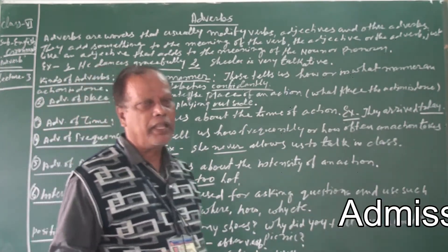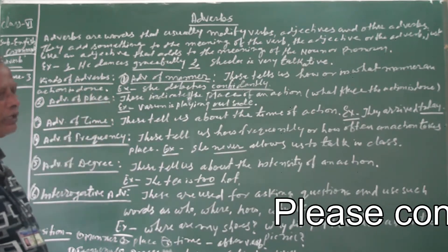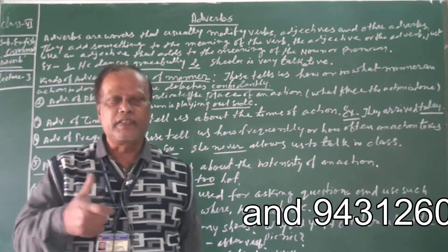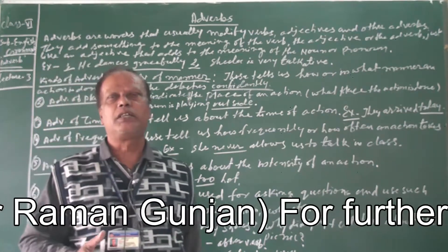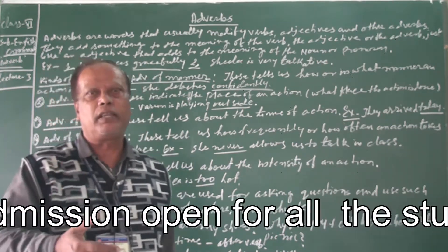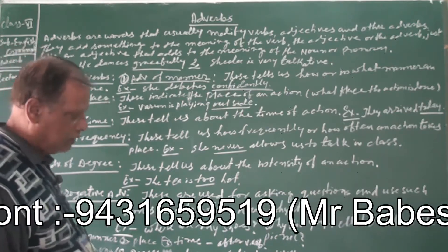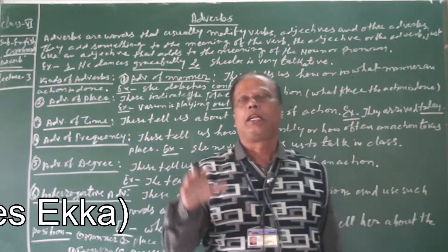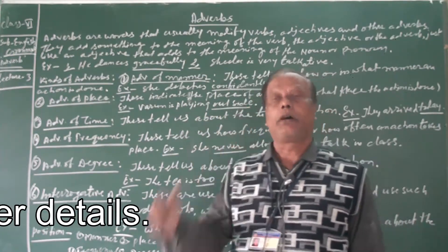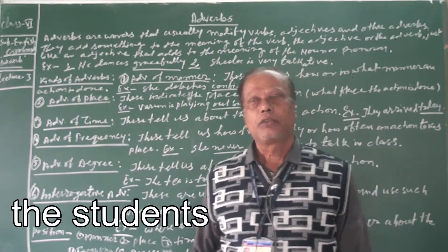An adverb can modify a verb — as in 'He dances gracefully,' where 'gracefully' modifies the verb 'dances.' When you say 'He is very intelligent,' the word 'very' modifies the adjective 'intelligent,' telling us how intelligent he is — so 'very' is an adverb. And in 'Fortunately, he came in time,' the word 'fortunately' modifies the whole sentence, so it is also an adverb.